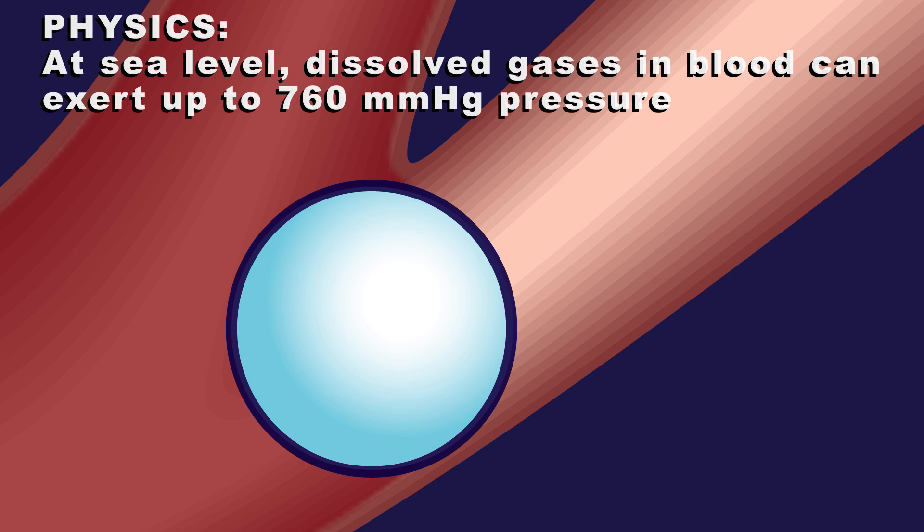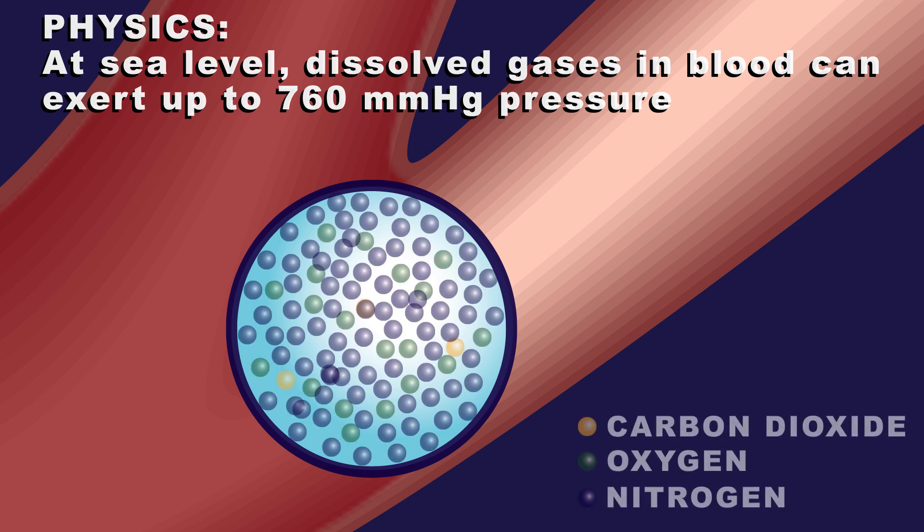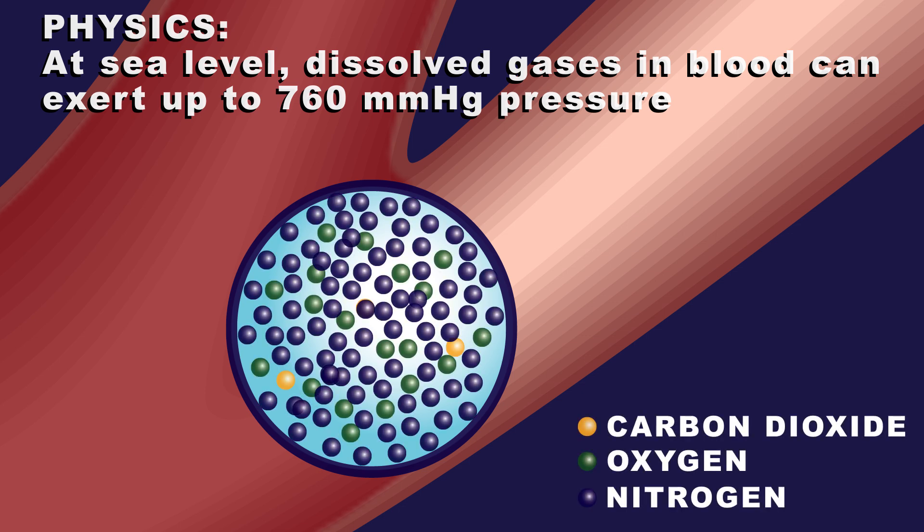The sum of the pressure of each dissolved gas may equal up to 760 millimeters of mercury. Any higher and dissolved gas pressures will result in gas bubbles. Gas moves due to pressure gradients. Air bubbles contain about 78% nitrogen, exerting about 592 millimeters of mercury pressure.